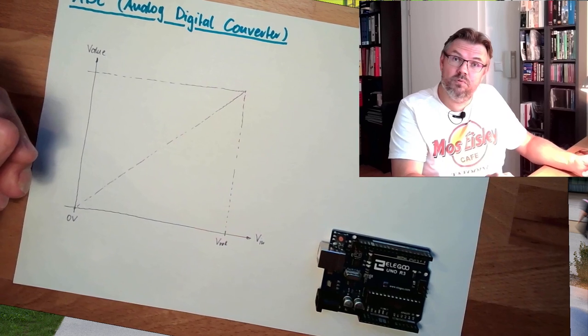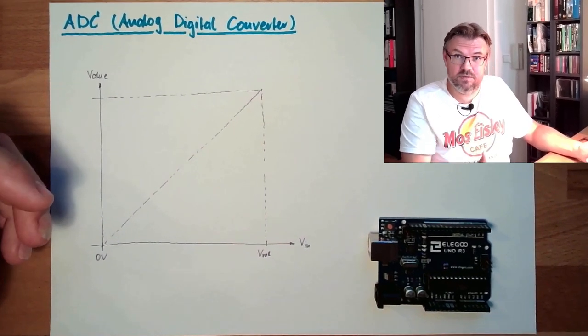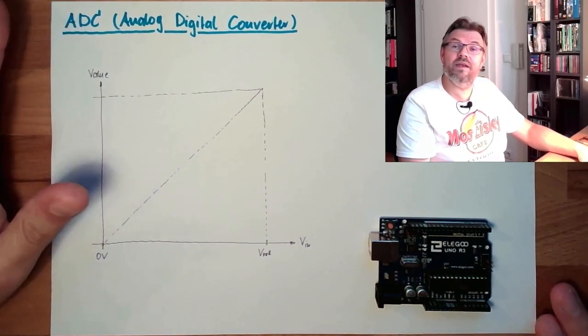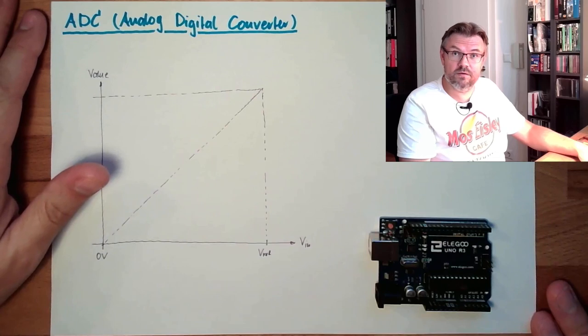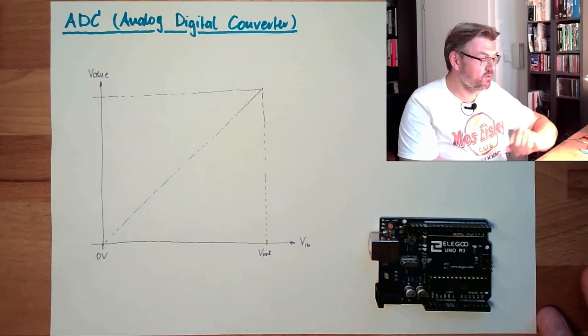The analog input things are really analog digital converters in our Arduino. Now I just want to tell you how an analog digital converter is working. This is the reason for this video. So we are talking about analog digital converter.